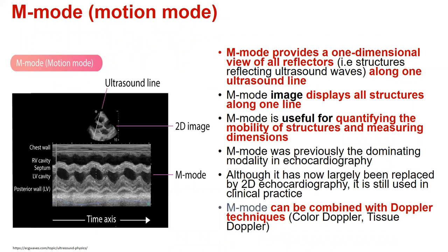Let's talk about the so-called motion mode, or M-mode. M-mode provides a one-dimensional view of all reflectors along one ultrasound line. M-mode image displays all structures along one line, and is useful for quantifying the mobility of structures and measuring dimensions, and it can be combined with Doppler techniques.